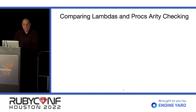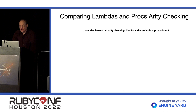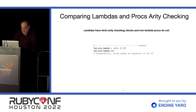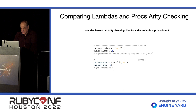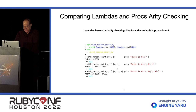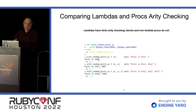Arity checking — arity is just the number of parameters passed to a method, and checking is making sure the correct number has been passed. Lambdas have strict arity checking; blocks and non-Lambda Procs do not. Here's a Lambda expecting two arguments — if we call it with one, we get an error. In contrast, a Proc has no complaint. Similarly, a code block has no complaint — if the block only expects one parameter, it uses the first value and substitutes nil for anything else that's missing.